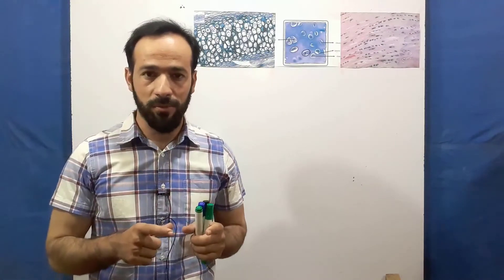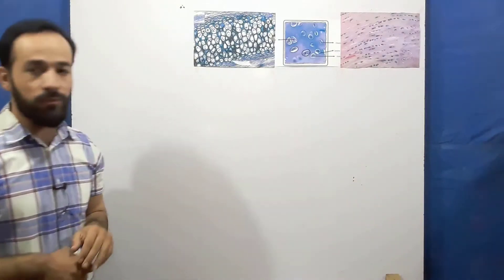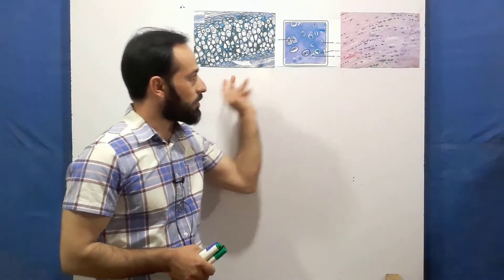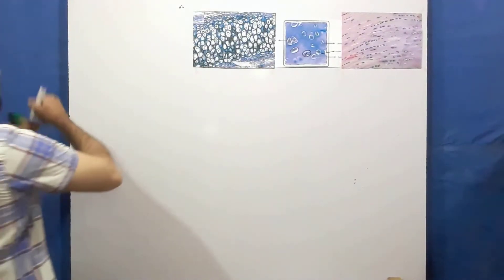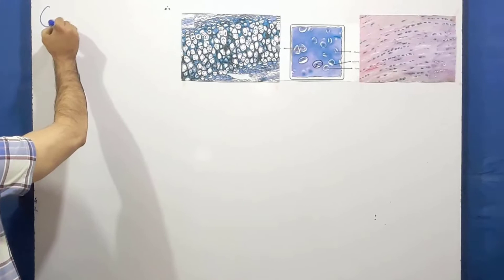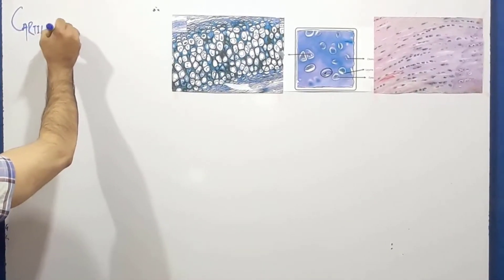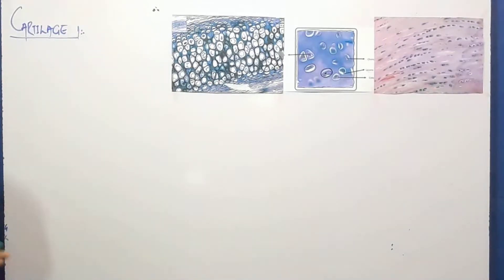Hello dear friends, assalamu alaikum and welcome back. We are discussing about tissues of the body. The previous lecture was about adipose tissue — types, locations, functions, and how it stores and releases fats. Now, as you can see on the whiteboard, we have three types of tissues, which are cartilages. So right now in this lecture we are going to discuss about cartilage.